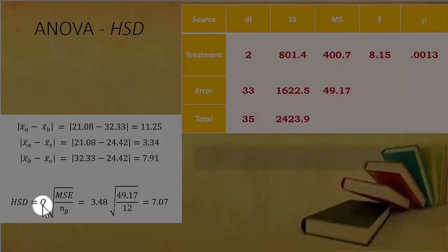So we'll just take Q. You'll have to use a Q table. Degrees of freedom will be 3, that's K, and 33, the same as our error term. So at 3 and 33 degrees of freedom we'll get 3.48 for Q.